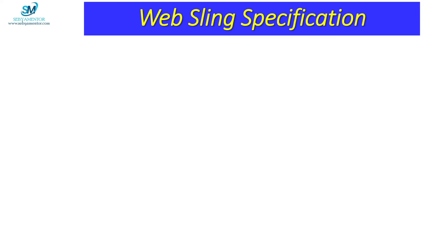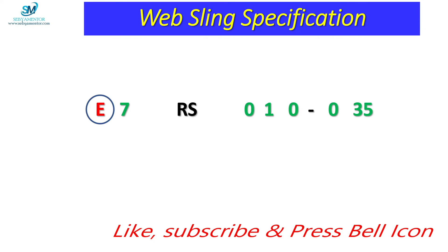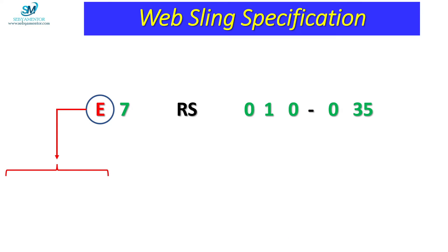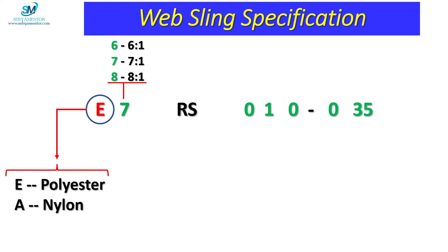Web sling specifications are generally in the form E7-RS-S010-035. Here, the first alphabet indicates about the web sling material — that is the material by which the web slings are made. E indicates polyester and A indicates nylon. The digit adjacent to the alphabet, that is 7, indicates about the safety factor. If it is written as 6, which means safety factor is 6 to 1; if it is written as 7, which means safety factor is 7 to 1.